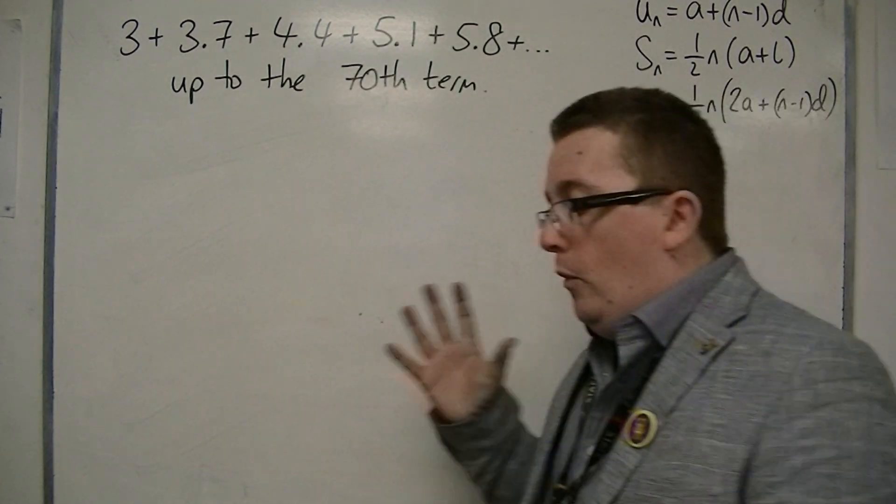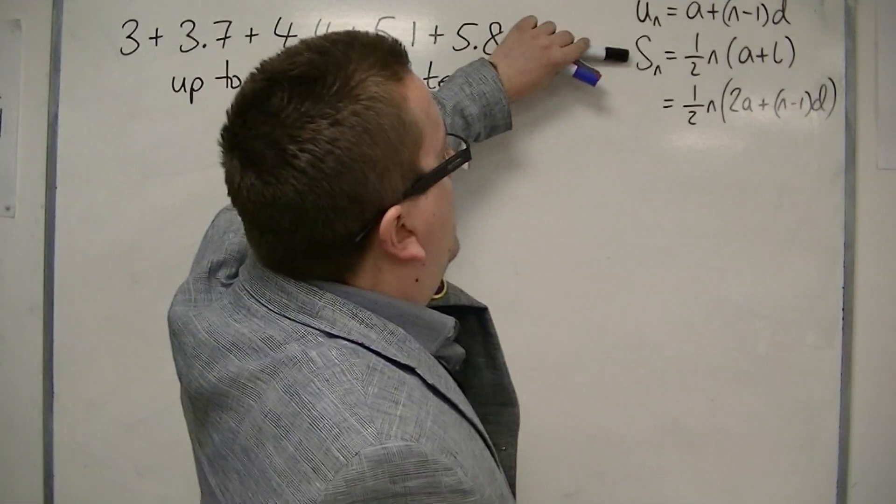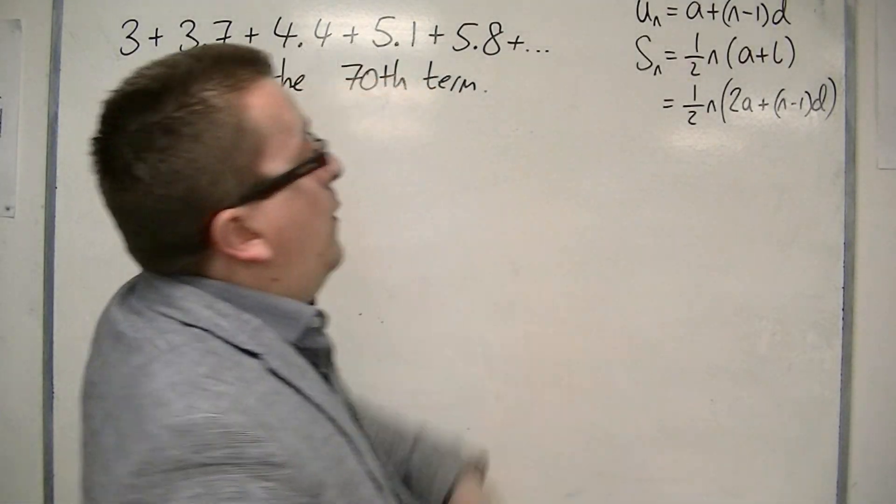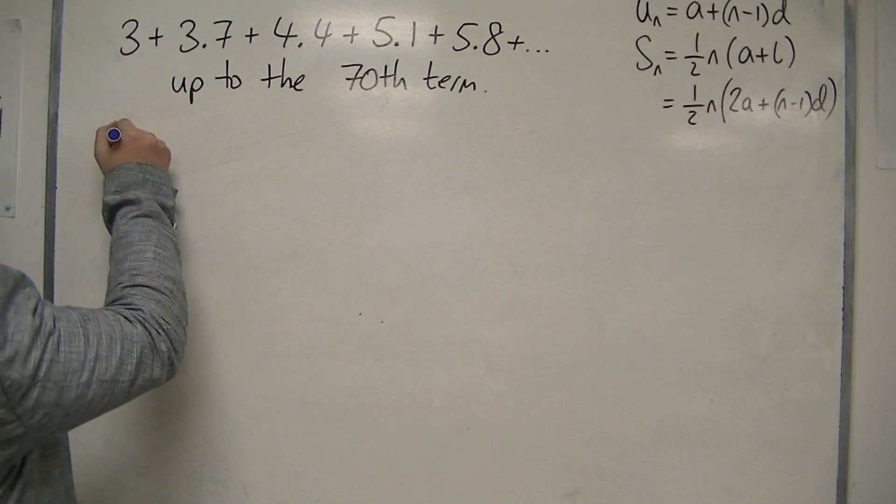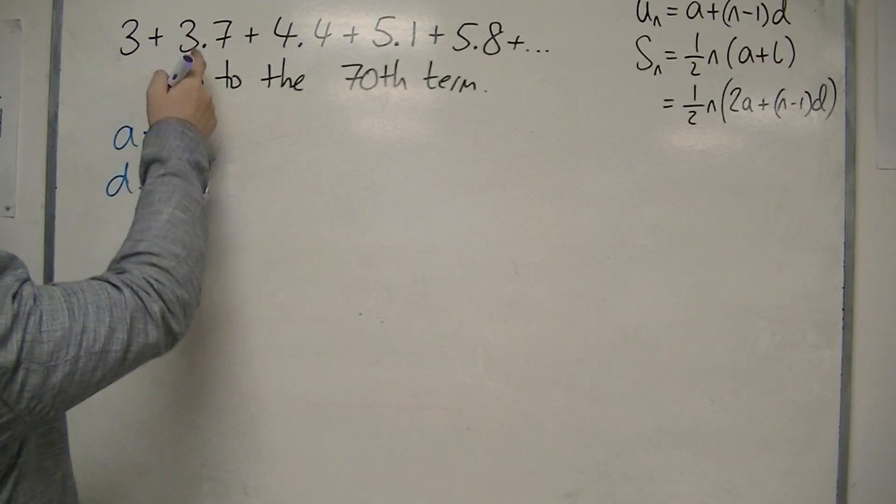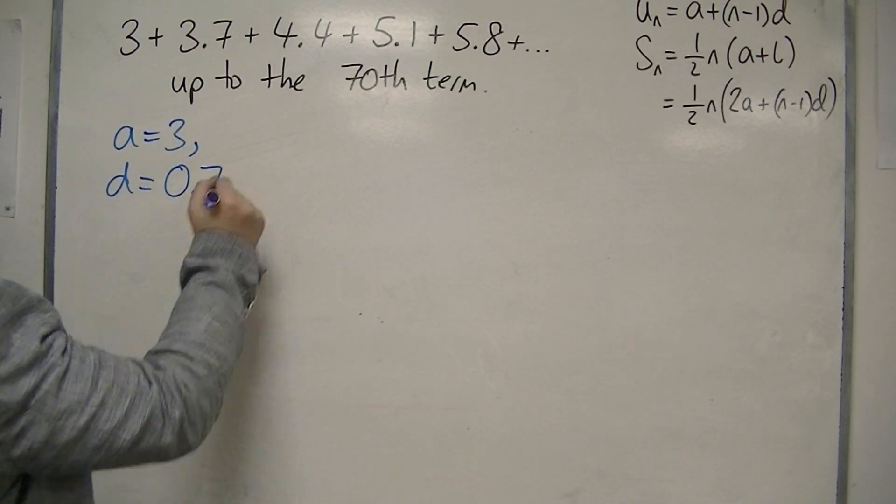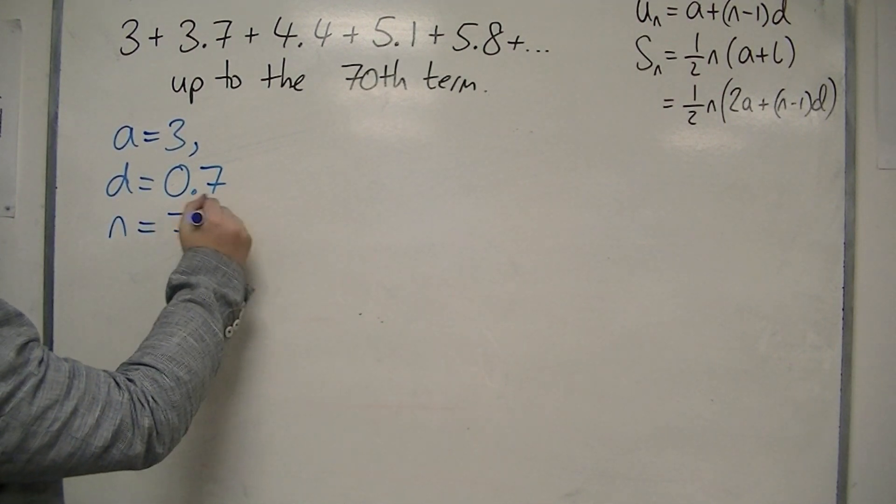Now I want to sum the series, so I want to use either that or that. Now what do I know? I know a, a is 3. I know d, because that's just 0.7, that's what I'm adding on each time. And I know n, because I want 70 terms.